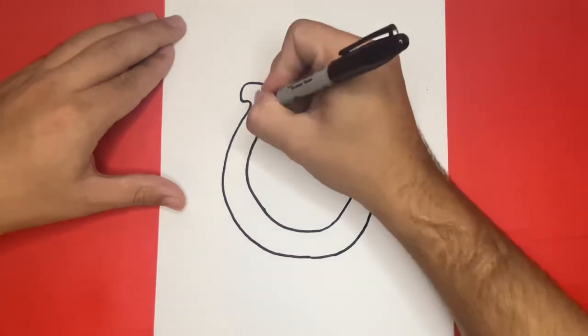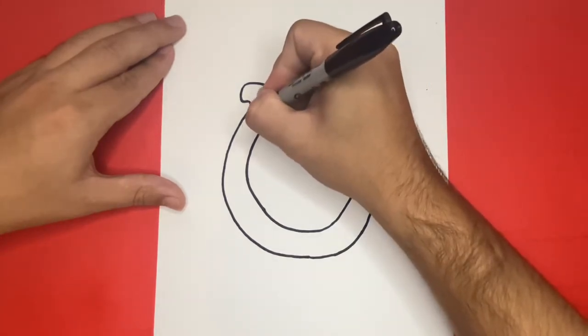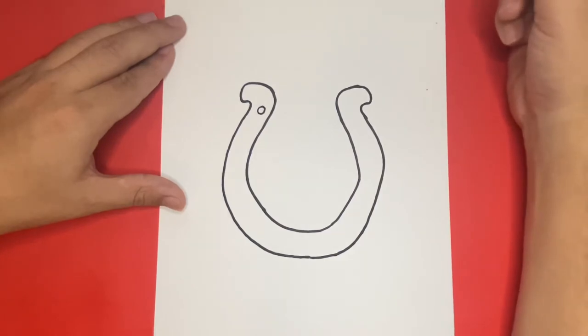In total, I'm going to draw 7 circles on the inside of the horseshoe, 3 on the left side, 3 on the right, and 1 on the bottom.